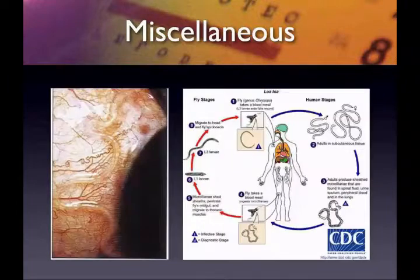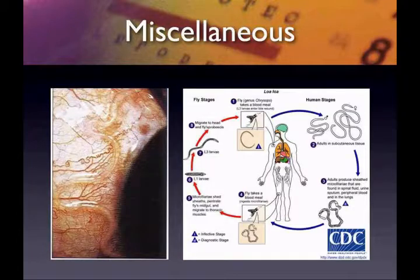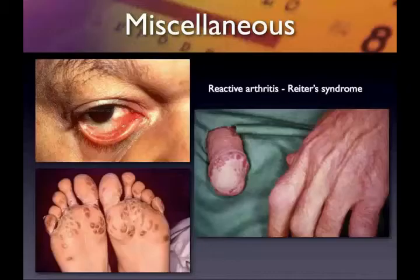Another case: a patient who had spent time in India presented with a strange foreign body sensation — almost a vibrating feeling — in their eye. Looking at the image, you can see something inside the eye. This is loa loa — a filarial worm. It is vector-driven. There are actually photographs of loa loa migrating across the cornea, which would be a deeply unsettling experience for any patient or clinician.